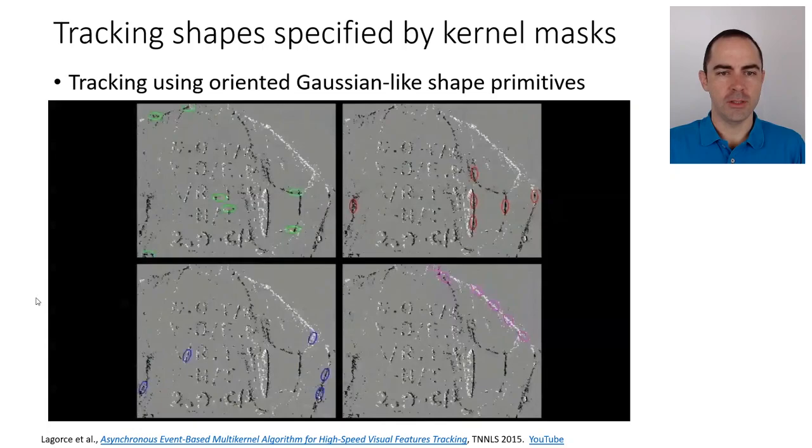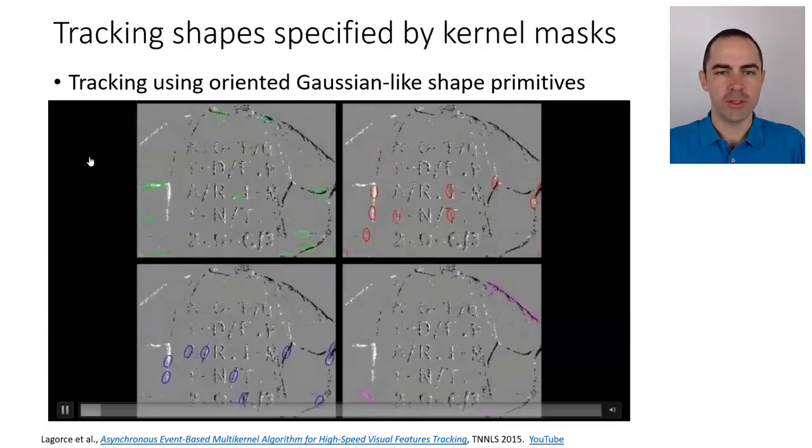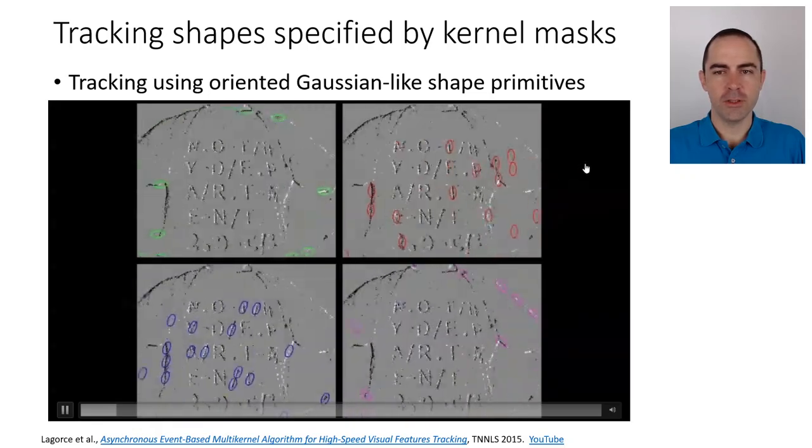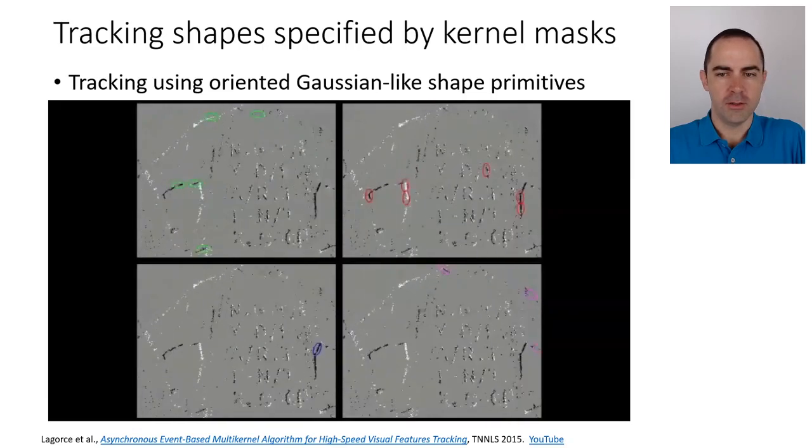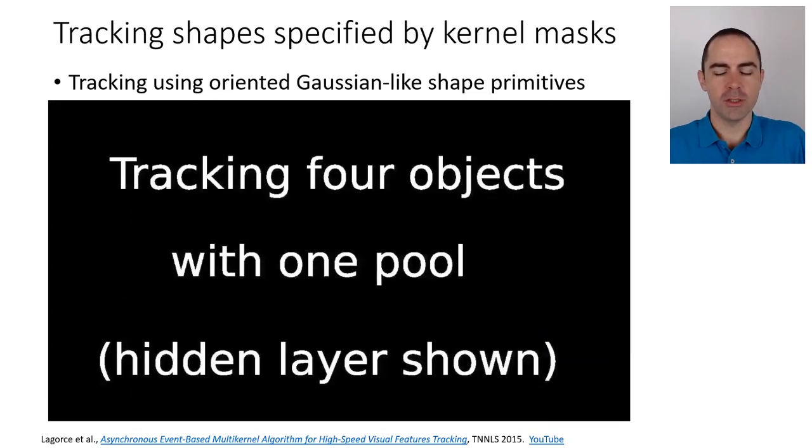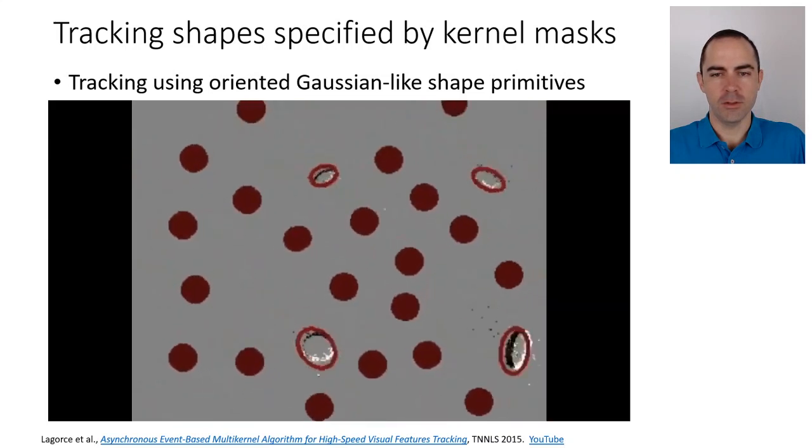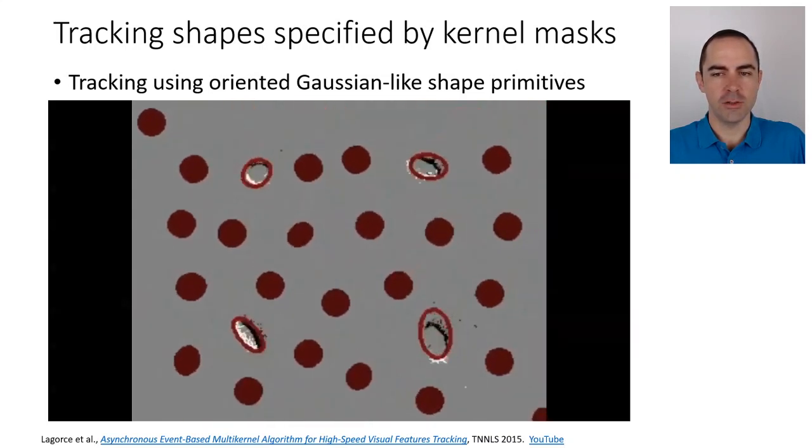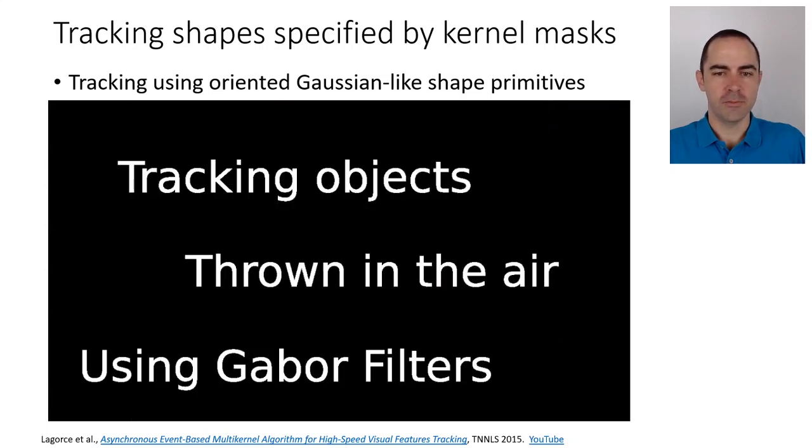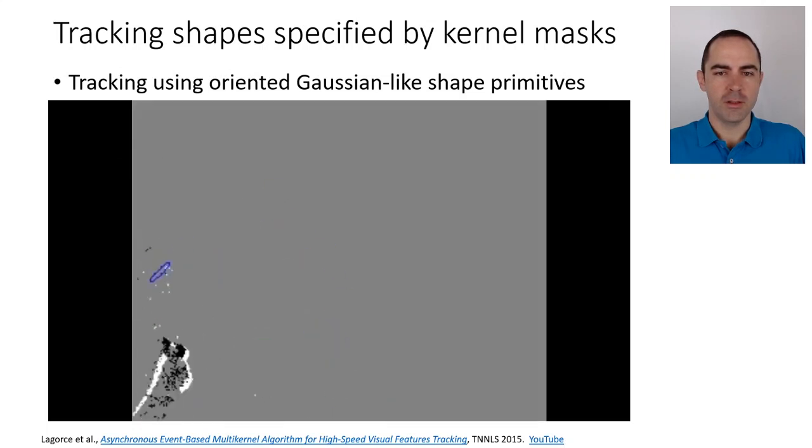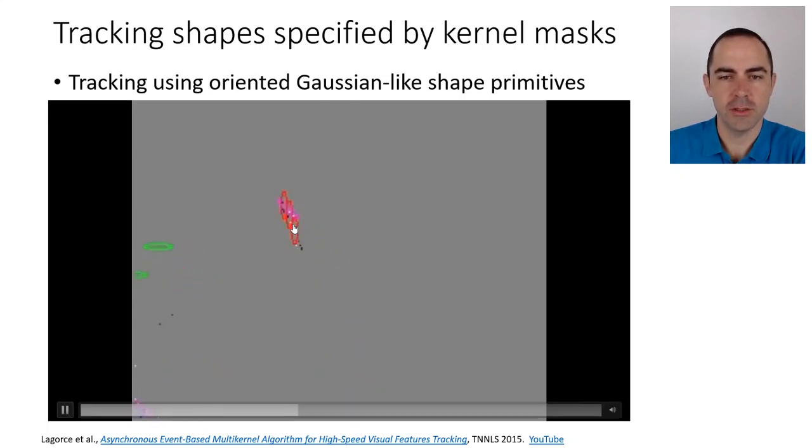In this case, using Gabor-like or Gaussian-like shape primitives: on the top left you can see horizontal ones; on the top right, vertical ones. You see they are elongated shapes, ellipses, that are approximating things in the real world. This is just an example with four objects being tracked, and they are changing orientation and changing size.